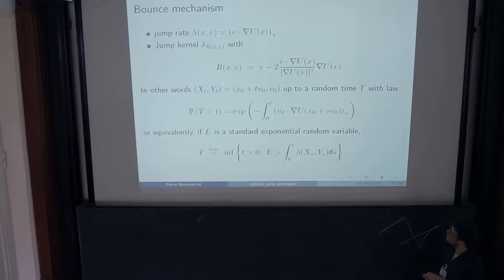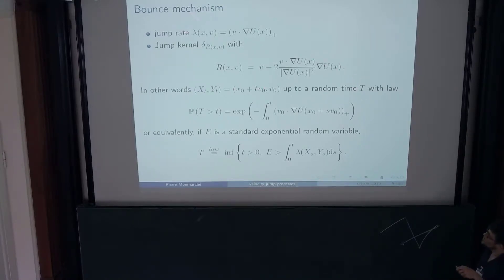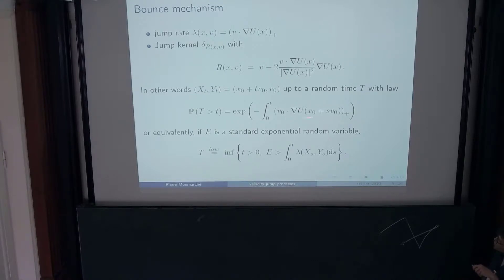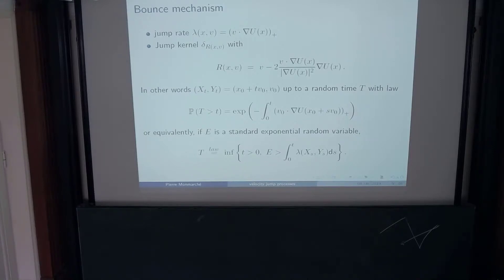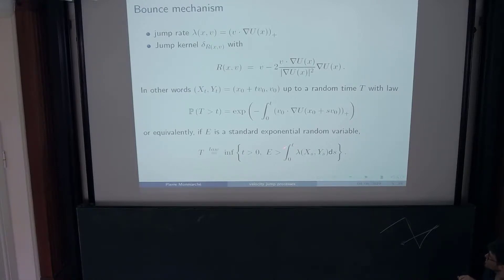The process has free transport at constant speed up to a random time. The distribution of the jump time is given by the accumulated jump rate along the trajectory — you accumulate the rate ∫₀ᵗ λ(X_s, V_s) ds. Another way to see this: at the beginning of the motion you draw an exponential variable E, which is the amount of jump rate you can accumulate. You run the trajectory, accumulate the jump rate, and when this accumulated value reaches E, you jump.